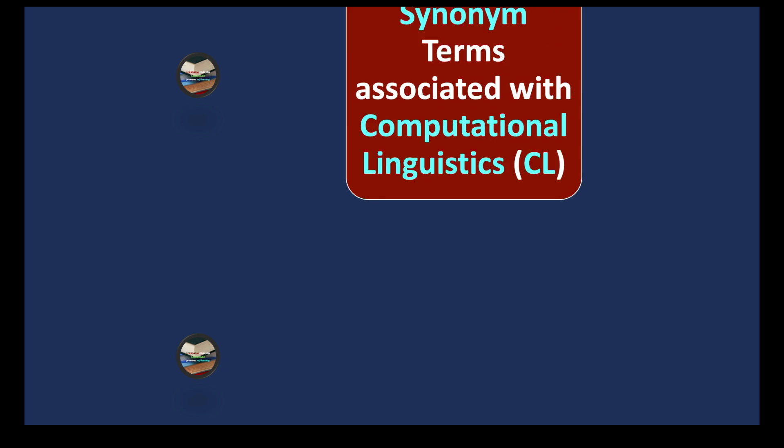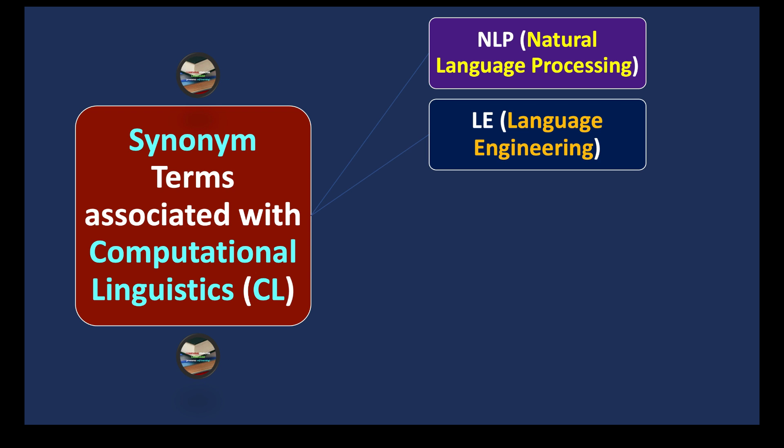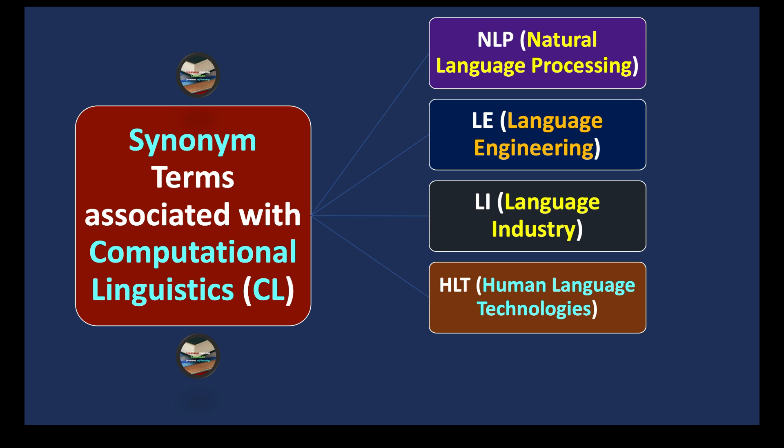We continue our discussion with synonym terms associated with computational linguistics. We have NLP, also called natural language processing, language engineering, language industry, human language technologies, and language technologies.